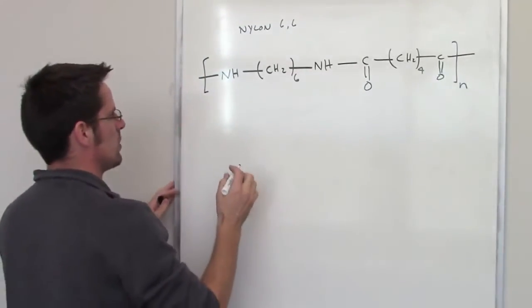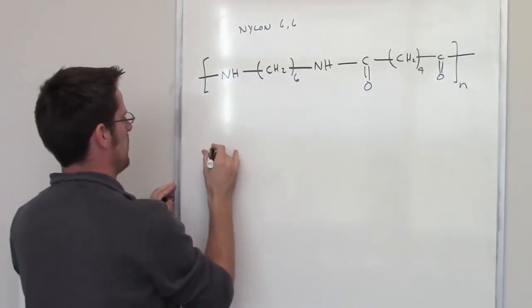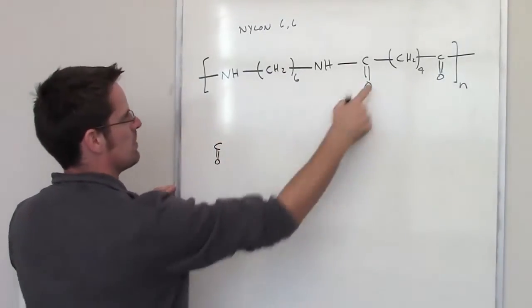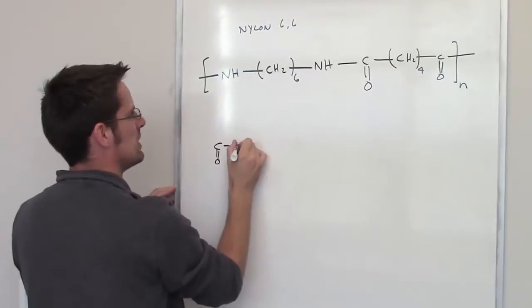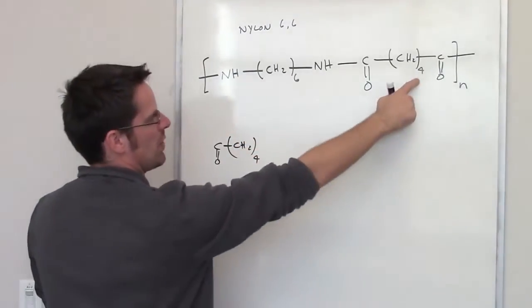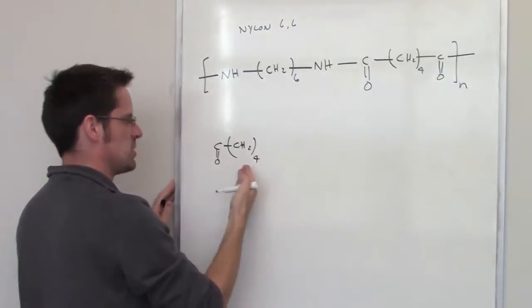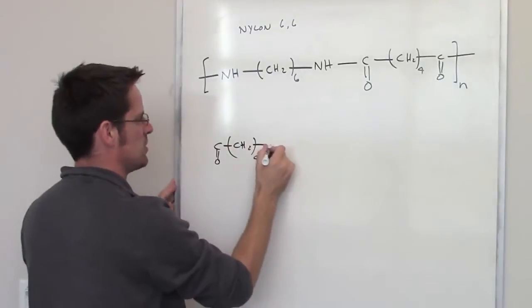Let me redraw that. You can imagine what I've got is this carbon here, double bonded to oxygen, stuck to four CH2s in a row. That's an abbreviated way of saying CH2CH2CH2CH2, four CH2s in a row.